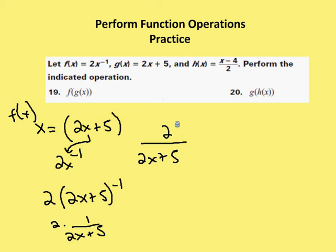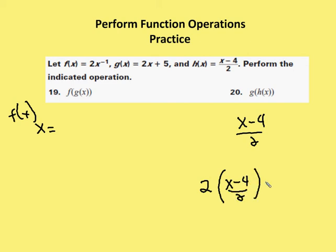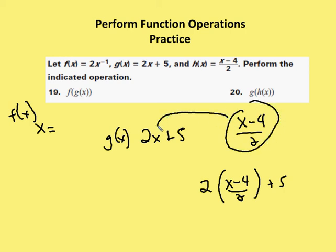I'm going to move on to number 20. Again, I'm taking a function and substituting that in for x in a subsequent function. I have g of h of x. h of x is x minus 4 over 2, and I'm going to substitute that in for x in g of x. So now I have 2 times, open parenthesis, x minus 4 over 2, close parenthesis, plus 5 — because g of x was 2x plus 5. 2 times x minus 4 over 2 simplifies: the 2s cancel and I'm left with x minus 4 plus 5, which is the same as x plus 1.